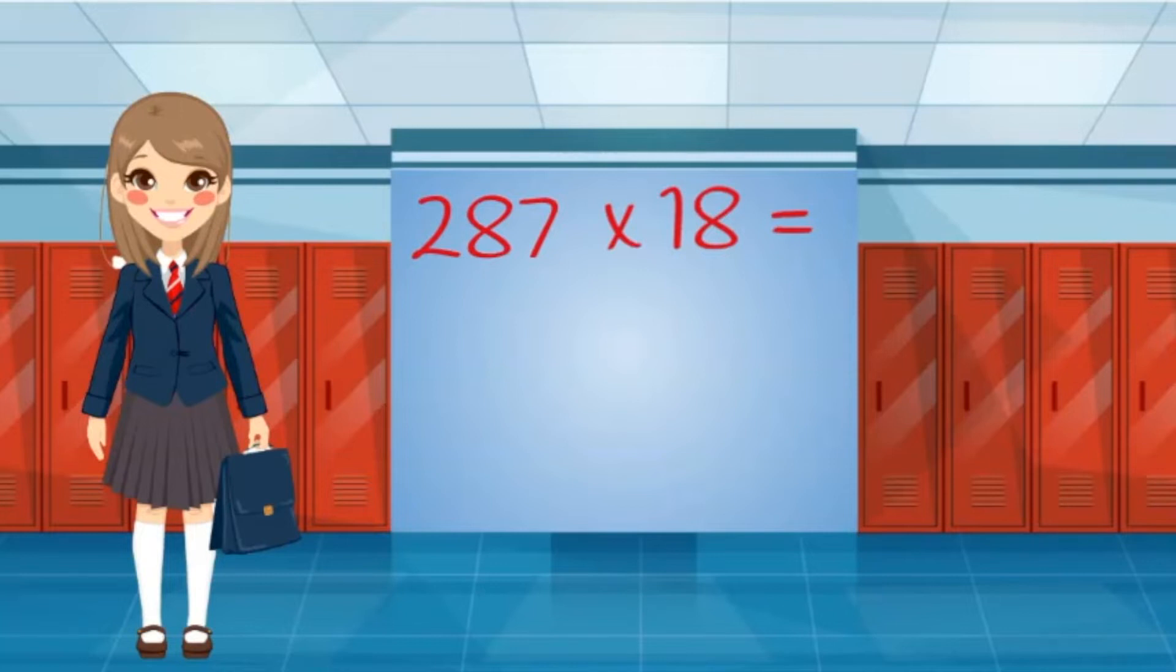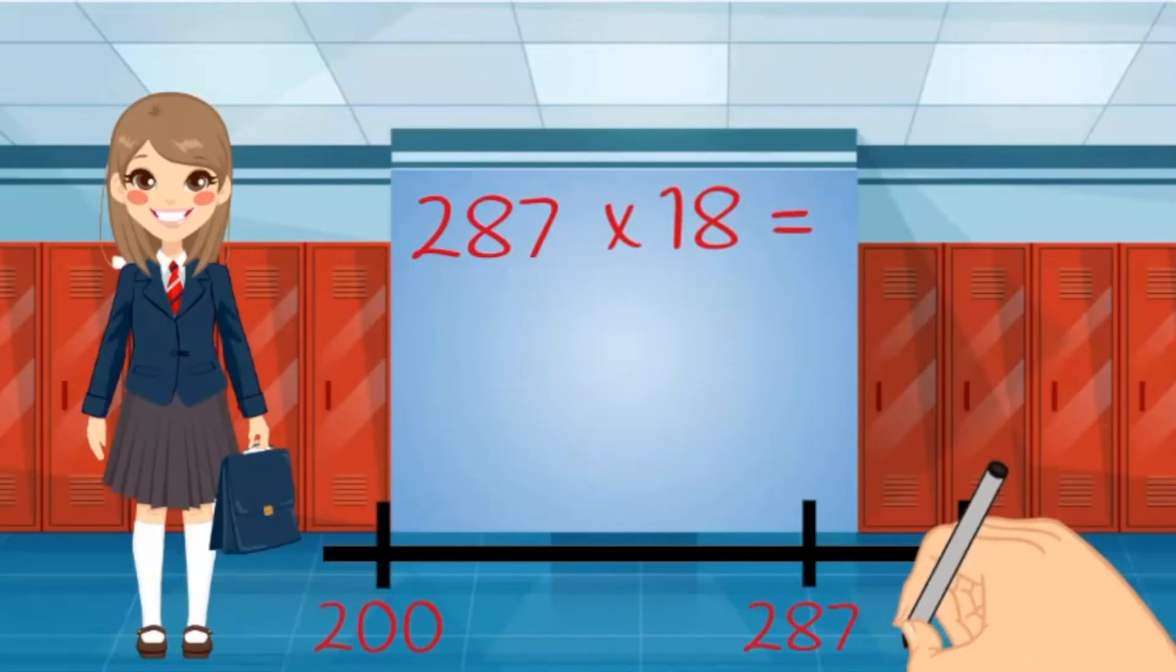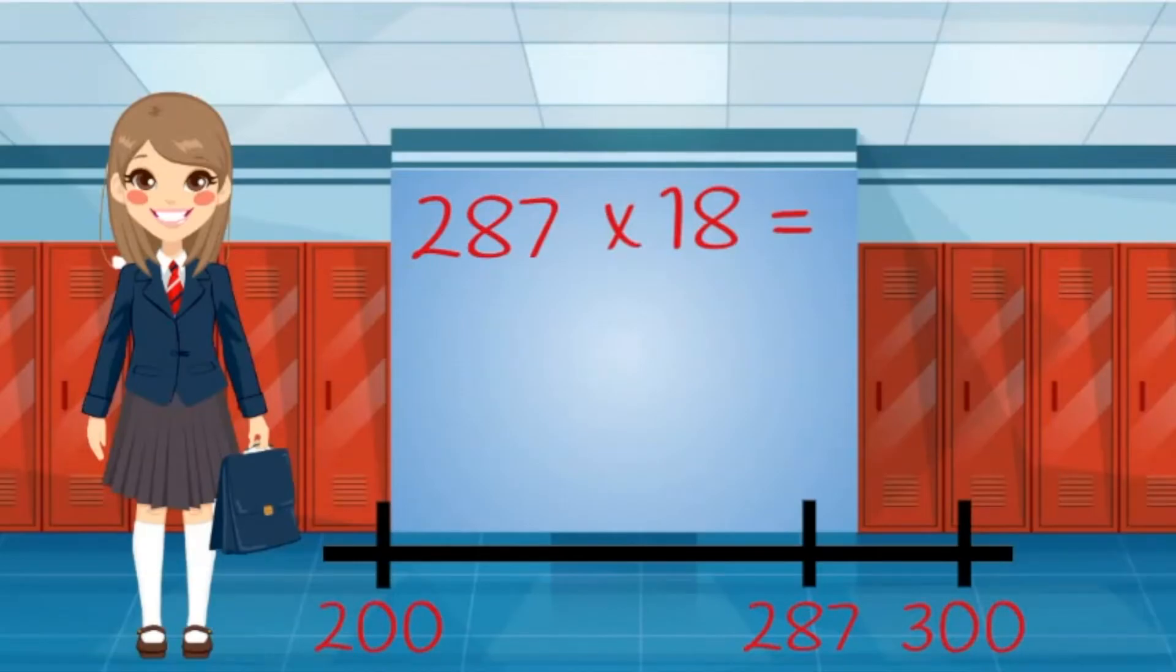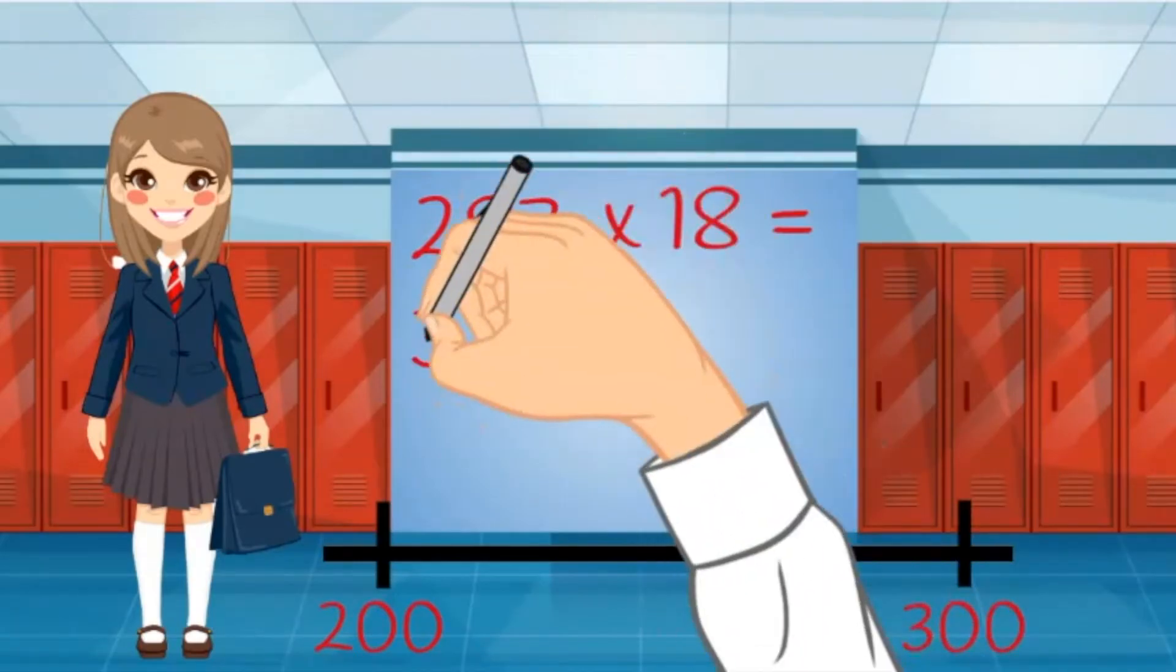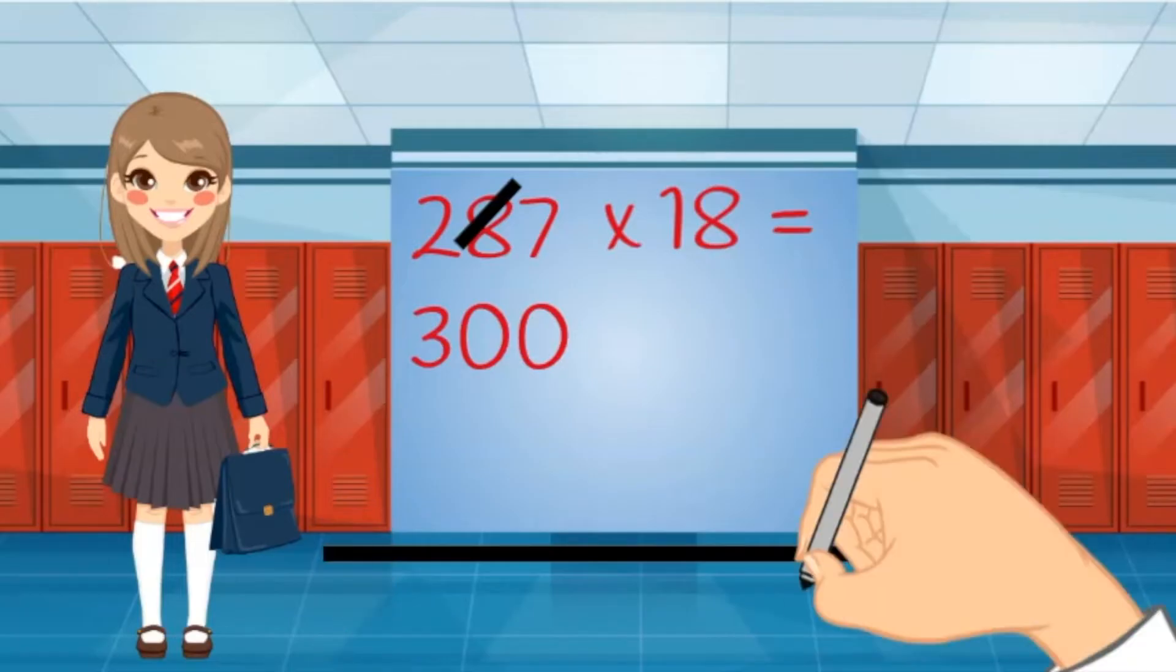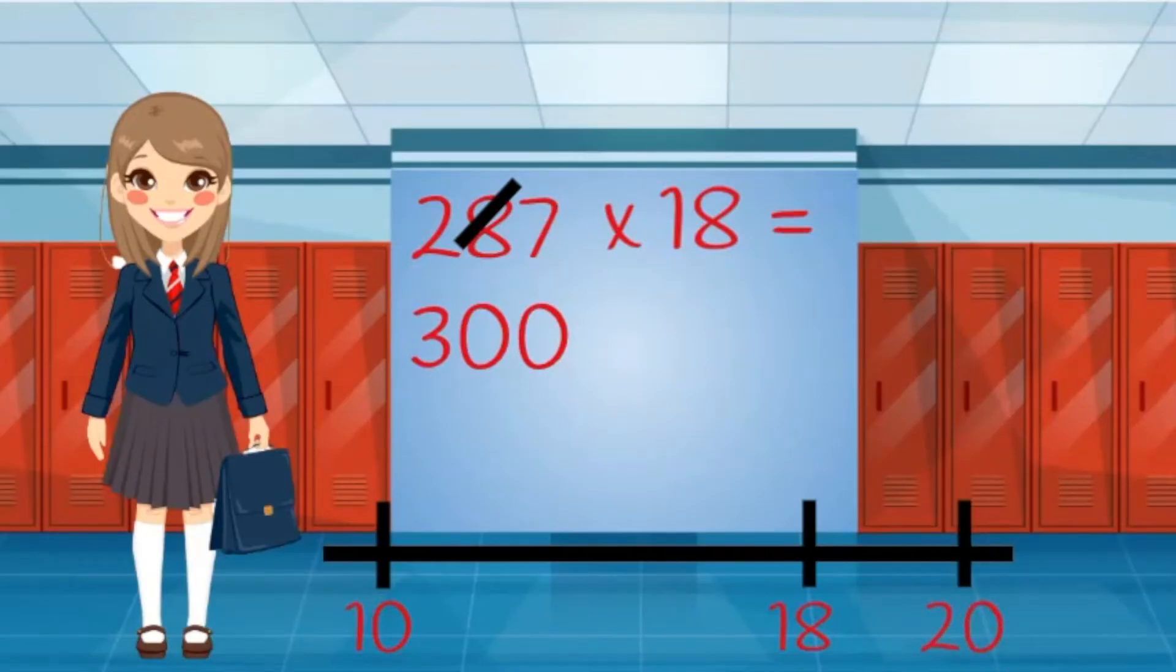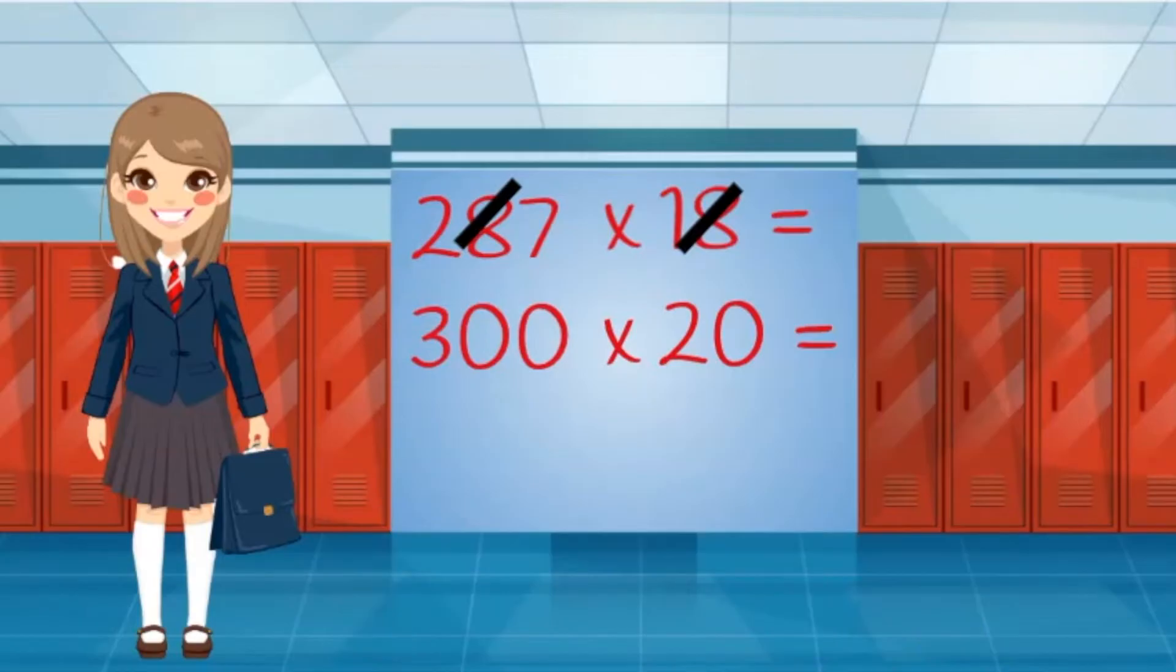I don't have time to figure out an exact number, so I will just round to make the numbers easier to multiply. 287 is more than 200 but less than 300. It is closer to 300. Each person should have about 18 snacks. 18 is more than 10 but less than 20. It is closer to 20.